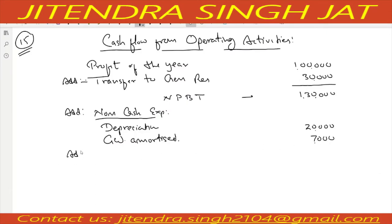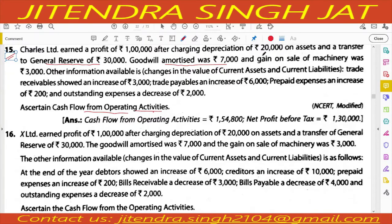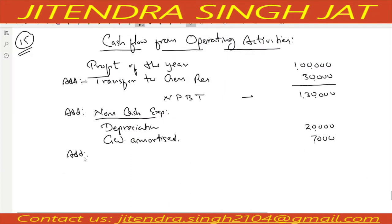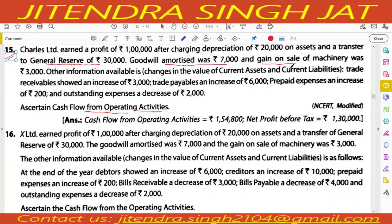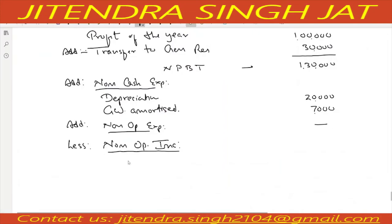Non-operating expenses are not given, but gain on sale of machinery is given — that is non-operating income of Rs. 3,000. So we subtract non-operating income: gain on sale of machinery Rs. 3,000 will be subtracted.